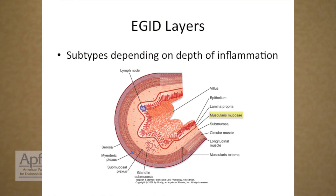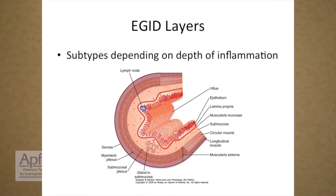I spend a lot of time talking to my patients that it's not just what's visible on the inside. You also have a muscular layer, and then behind that you have a serosal layer that is in direct contact with the abdominal cavity. You can get eosinophilic infiltration in any of those layers of the bowel, and that can also change the presentation, symptoms, and course of the disease.